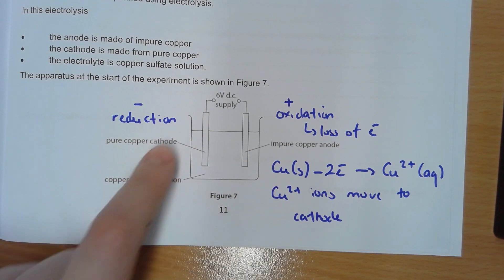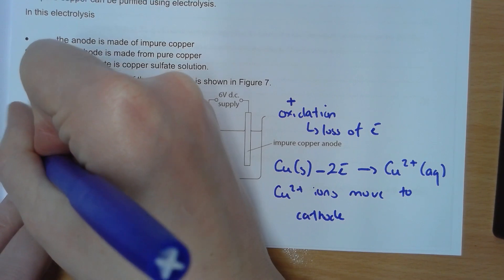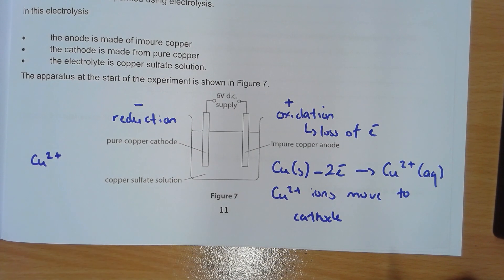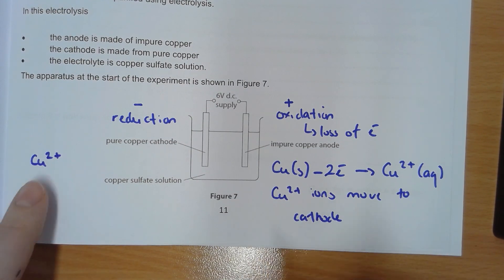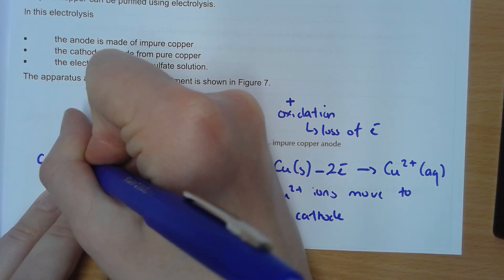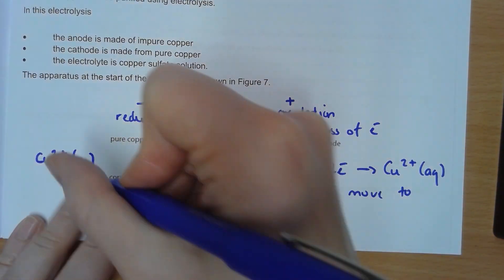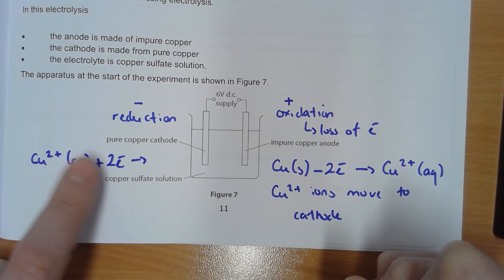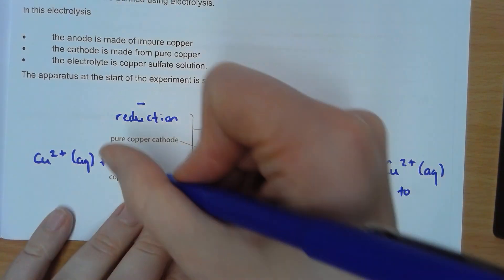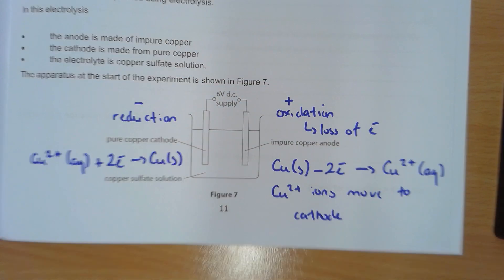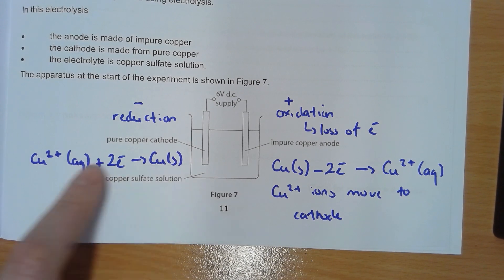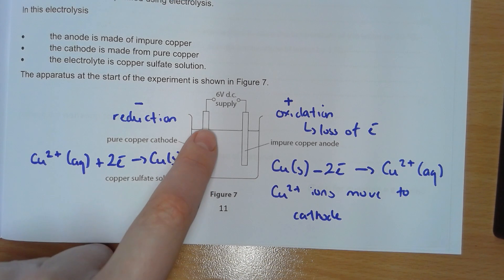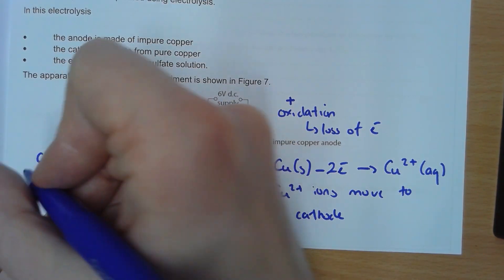All of those Cu²⁺ ions move over to the cathode because positive is attracted to negative. At the cathode, reduction occurs - reduction is gain of electrons. Because copper lost two electrons at the anode, it gains those two electrons back at the cathode: Cu²⁺ + 2e⁻ → Cu. When those ions gain electrons they turn back into solid copper atoms, which are deposited on the cathode.